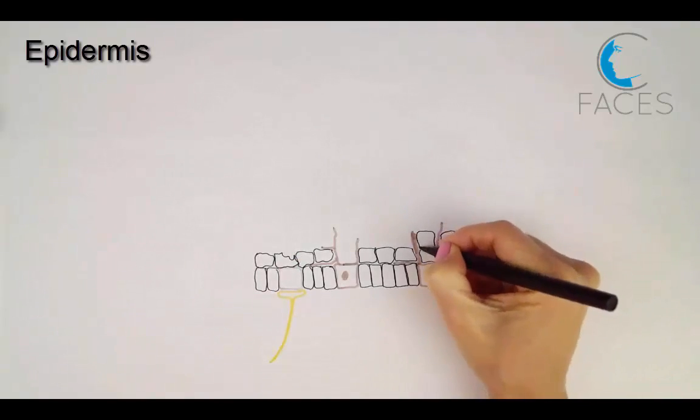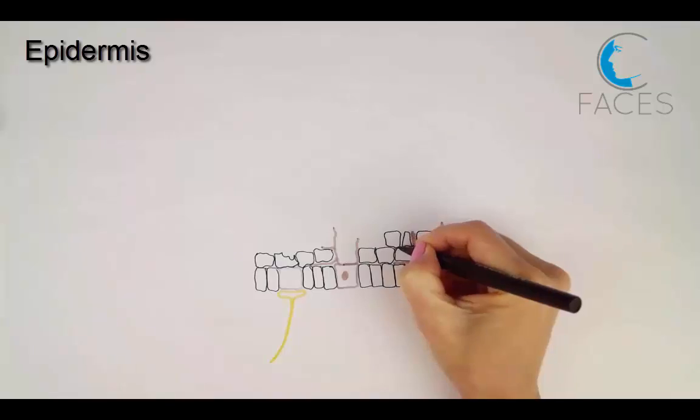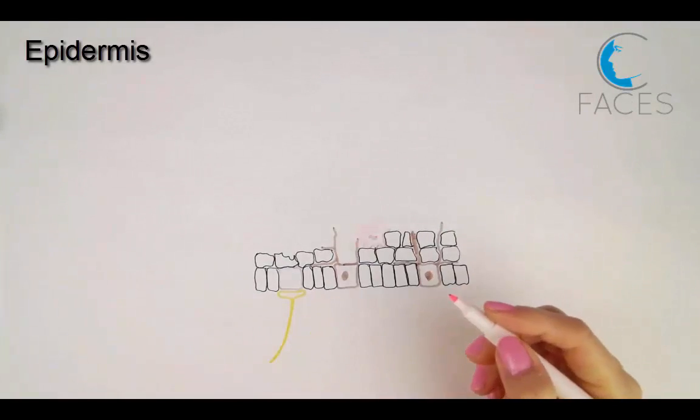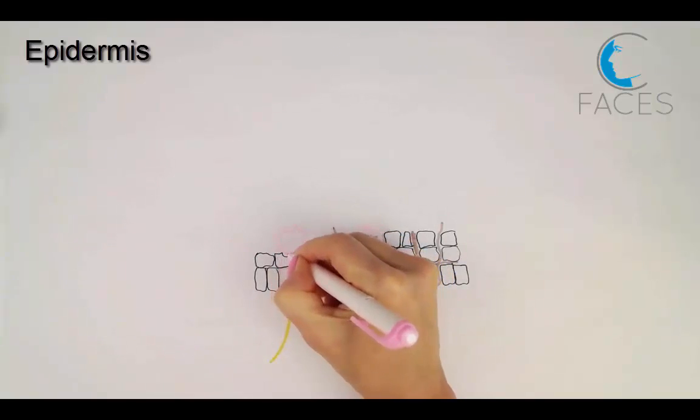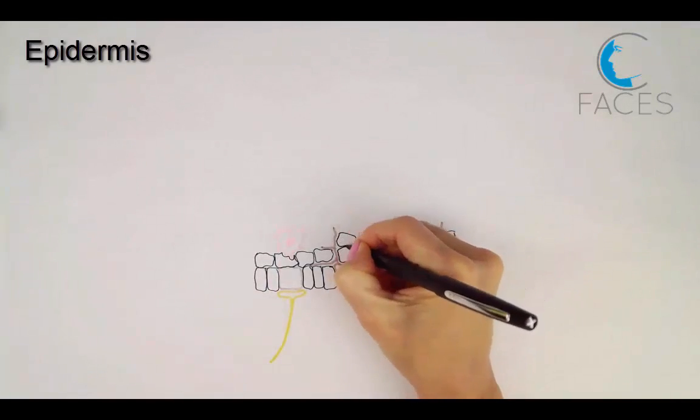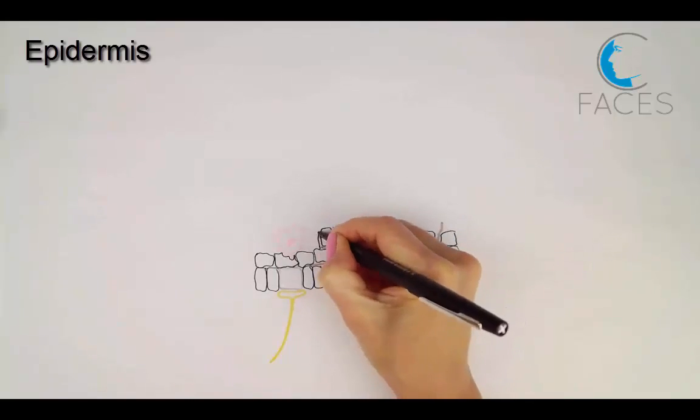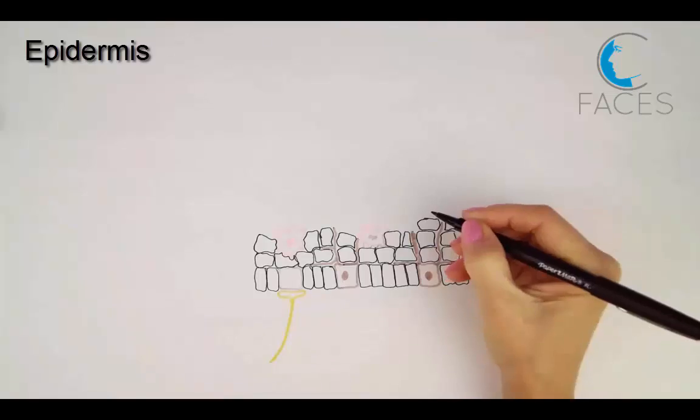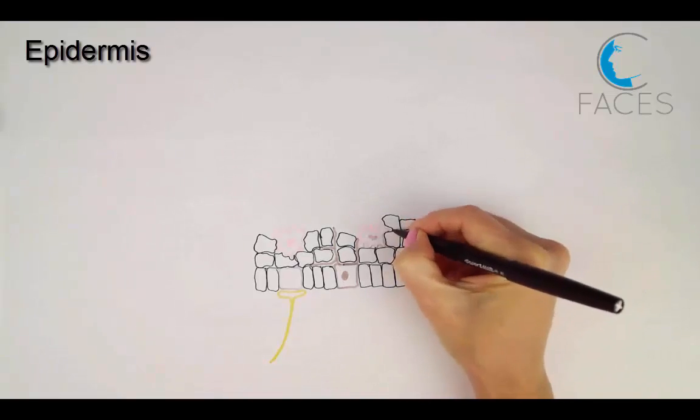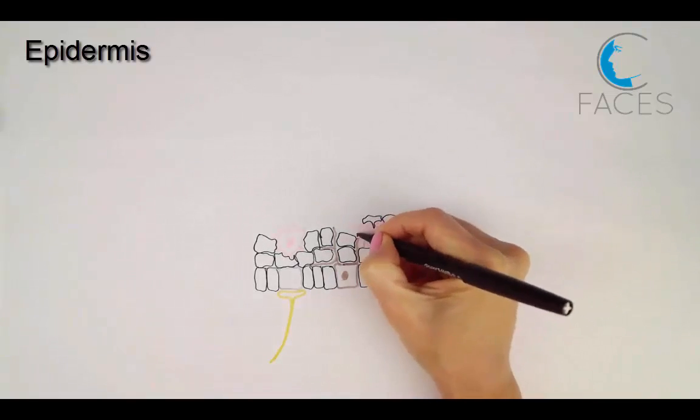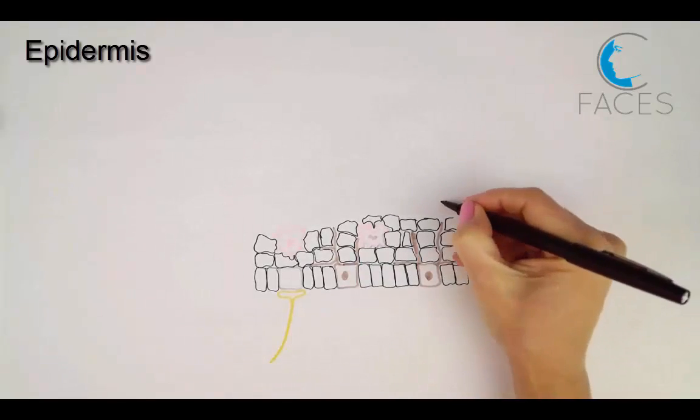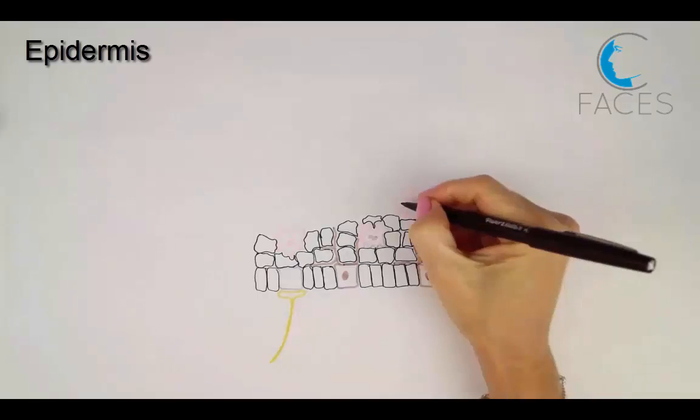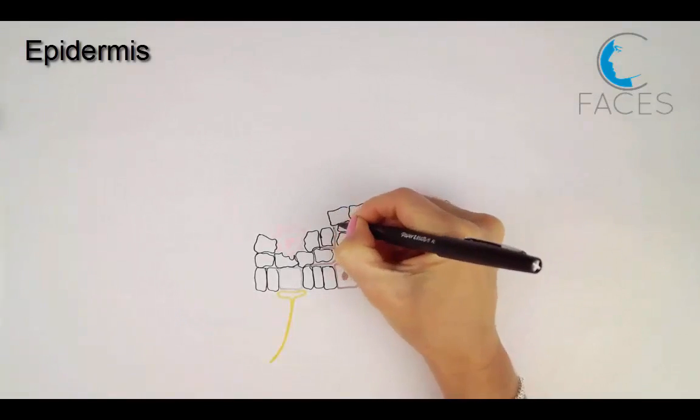The next layer is the stratum spinosum, or spinous layer, which is normally the thickest layer. The cells here are largely polyhedral cells with central nuclei and actively synthesize keratins. The skin of the palms of the hands and soles of the feet has a thicker stratum spinosum. Antigen-presenting cells called Langerhans cells represent about 2-8% of the epidermal cells and are usually seen most clearly in the spinous layer. They bind, process, and present antigens to T lymphocytes, making up a major component of the skin's adaptive immunity.